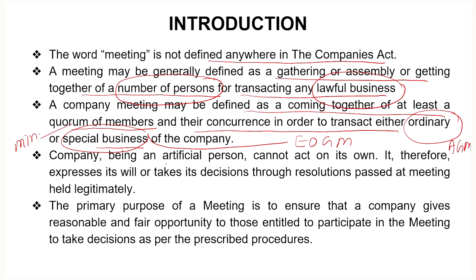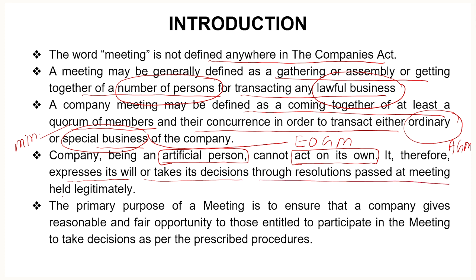A company meeting may be defined as a coming together of at least a quorum of members. Quorum basically means the minimum number of persons required to declare any meeting as a valid meeting. Their concurrence is required in order to transact either ordinary or special business. If they conduct ordinary business, that meeting is known as an annual general meeting. If they conduct special business, that meeting is known as an extraordinary general meeting.